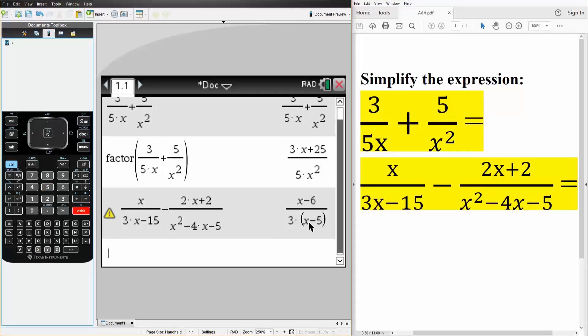And this is the final answer: x minus 6 divided by 3 parentheses x minus 5. And that's all we need to do for these two problems.